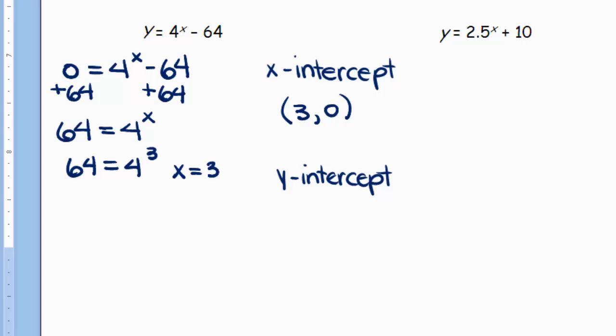For the y intercept, this time let x be 0. I have y = 4^0 - 64. This you just need to simplify. 4 to the 0 is 1, and 1 minus 64 is negative 63. The y intercept is then (0, -63).